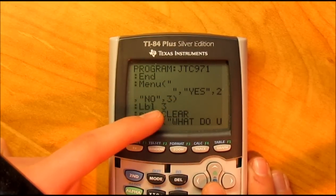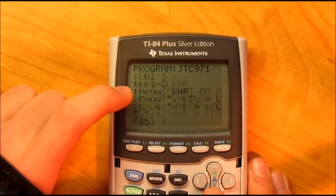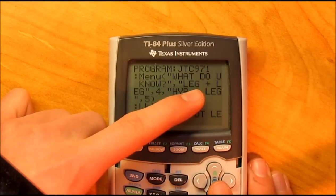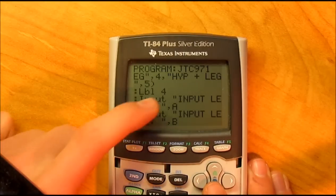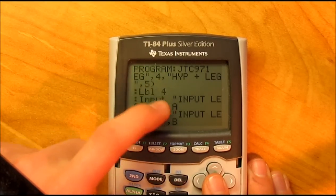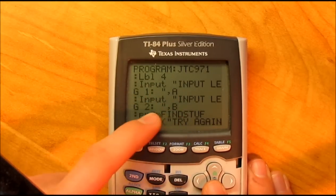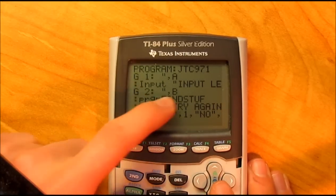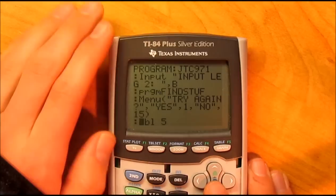Then you got label 3, then program clear, and then this is asking if you know the leg and other leg, or hypotenuse and leg. Then it's directed to label 4. This is two legs, so you're inputting leg 1, input leg 2, storing them as A and B, and then you're running program find stuff.